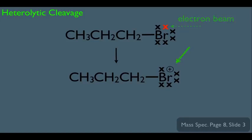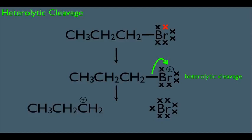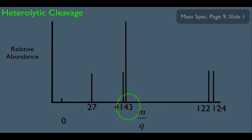Something else could also happen. The positive charge has the ability to attract electrons — specifically, the electrons in the adjacent bond can jump up onto that positive charge. This is called heterolytic cleavage. The result is a carbocation fragment and a Br fragment. It's the charged structure that gets detected by the mass spec, so we should expect to see a peak at 43. Looking at the mass spec of this molecule, we see the 43 peak, along with the molecular ion peak at 122.